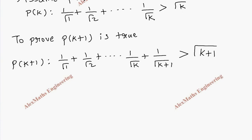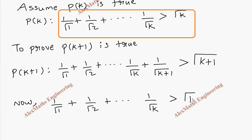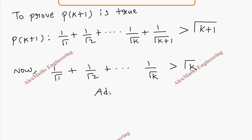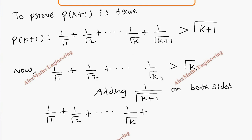We already know the P(k) expression: 1/√1 + 1/√2 + ... + 1/√k > √k. To get the P(k+1) expression, we add 1/√(k+1) on both sides. So we add 1/√(k+1) to the LHS and also to the right-hand side which already has √k.